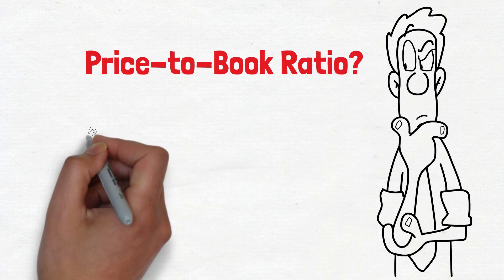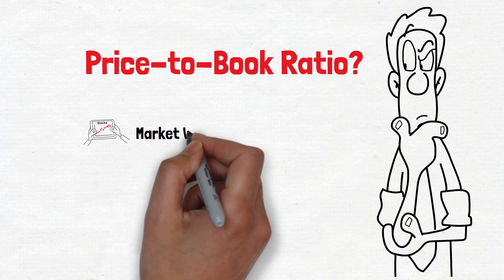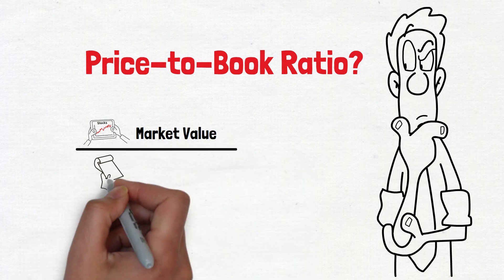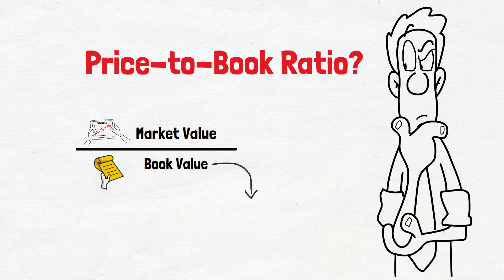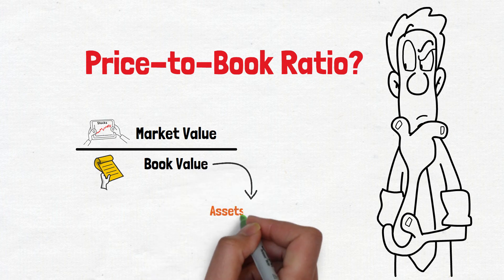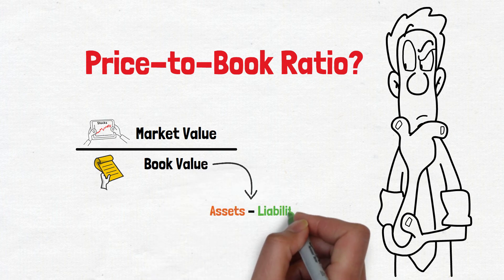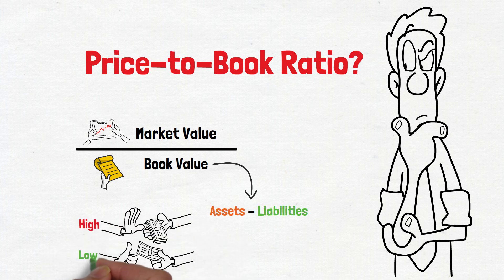What is a price-to-book ratio? In simple language, price-to-book value is the ratio of the market value of a company's shares over its book value of equity. The book value is defined as the difference between the book value of assets and the book value of liabilities. Price-to-book value ratio is often used by investors to understand whether a stock is valued high or low.